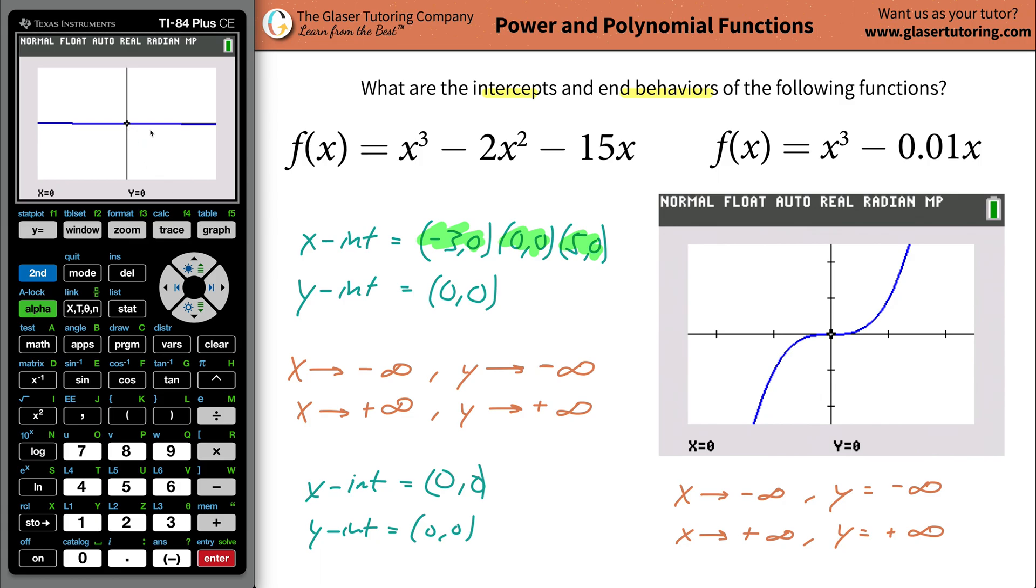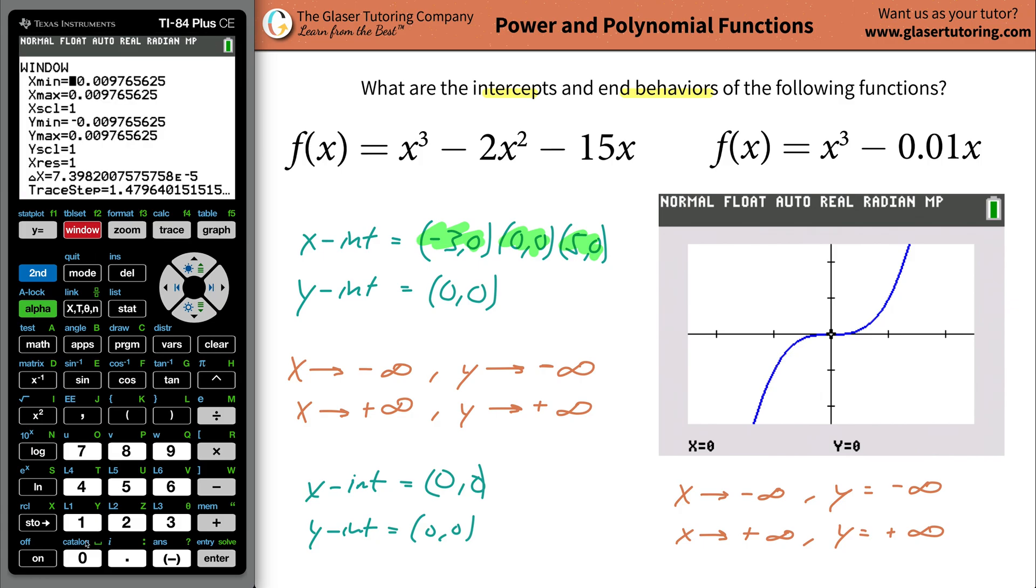If you notice, this is starting to come down here a little bit. We actually might have another x intercept. Now this is very deceiving. But let's change the window a little bit. Let's go to x min of zero. Let's go to x max of, why don't we go to x max of one. And we'll scale this all by point one.